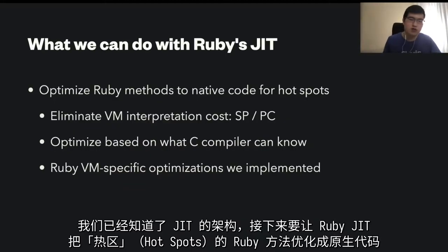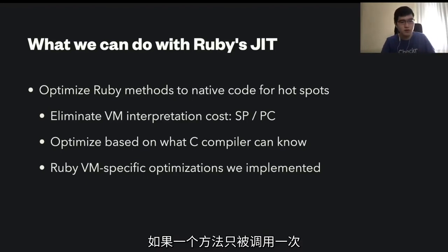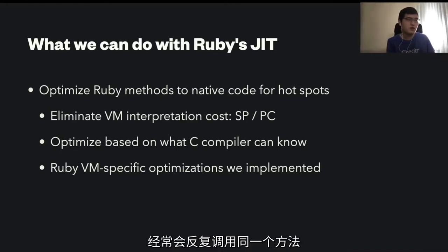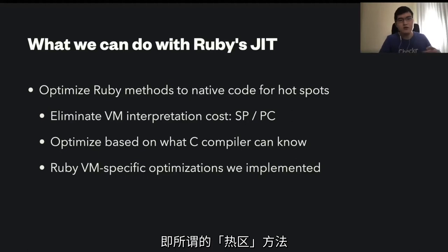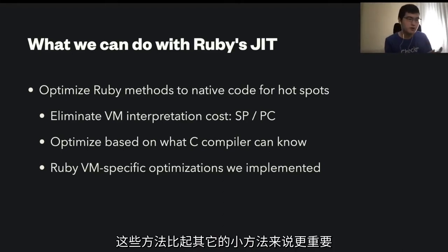Once we have this JIT architecture, what we can do with Ruby's JIT is optimizing Ruby methods to native code for hotspots. By hotspots I mean it compiles only the methods which are called very often. If there is a method which is run only once, we don't compile that kind of method. When we run our application server like Rails, we execute the same methods very often, so those are the targets of JIT compilation. By focusing on important methods, that contributes to more performance.